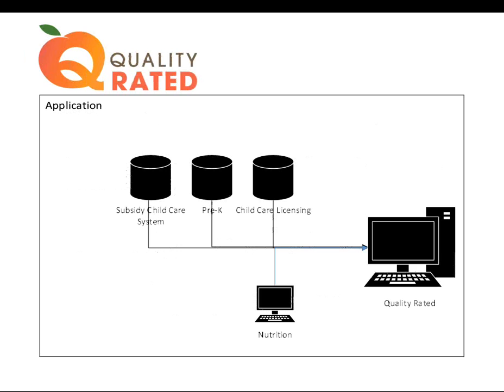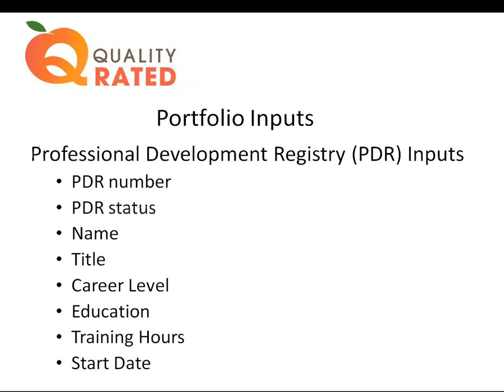The next graphic gives a nice visual of how that looks — showing the subsidy child care system, the Pre-K system, and the child care licensing system, all pushing in through a web service quality rated information into our application. The next slide shows portfolio inputs. Quality Rated looks at structural quality through the uploading of a child care program portfolio, and the portfolio allows programs to give us evidence that they meet criteria supporting Quality Rated.